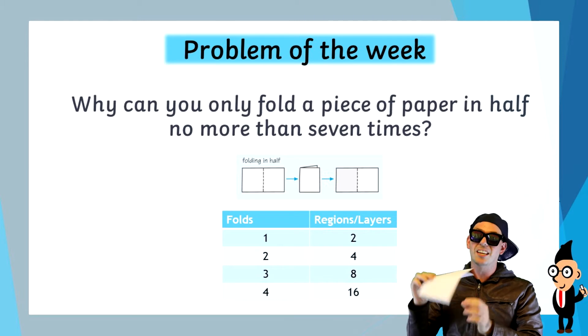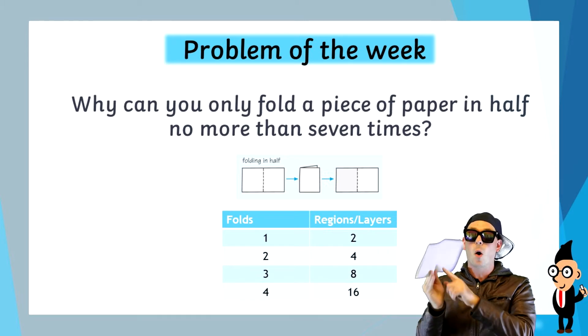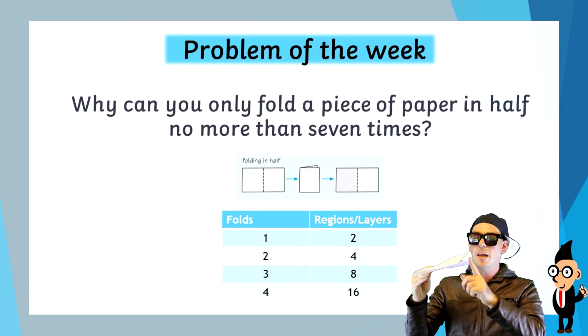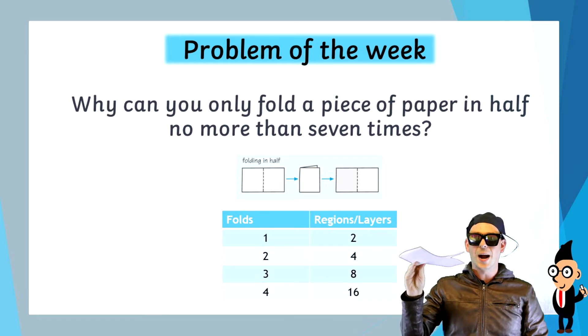But when it's folded, these regions become layers. So after one fold, the paper has two layers.